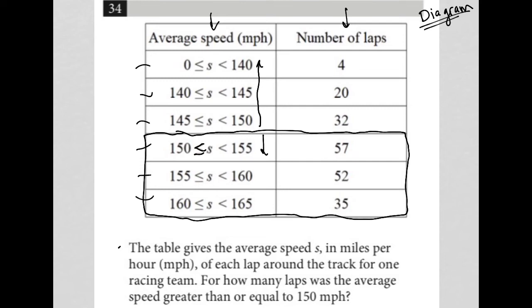We have 57 plus 52 plus 35. I have a calculator, but let's just do this by hand. So 7 plus 2 is 9, plus 5 is 14. I'm just adding all these together. So 4, carry the 1. 1 plus 5 is 6, plus 5 is 11, plus 3 is another 14. So 144 laps were completed at an average speed that was greater than or equal to 150 miles per hour.